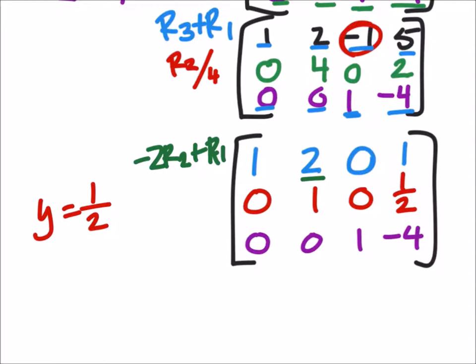So, for example, right, 0 times negative 2 is 0 plus 1 is still 1. 1 times negative 2 plus this 2 is, that's the 0 that we wanted. 0 times negative 2 plus 0 is 0. And this is great. Negative 2 times 1 half is negative 1 plus 1 is 0. And now we have a fully reduced row echelon form matrix.